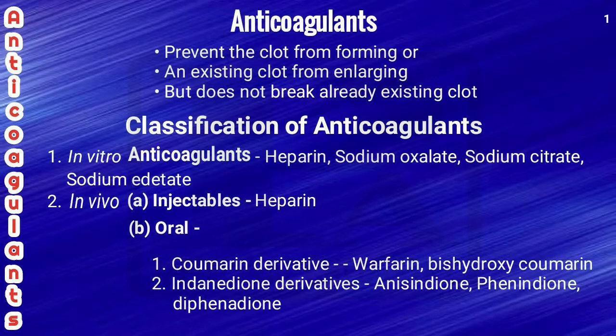In this class we are going to see anticoagulants. What are anticoagulants? They prevent the clot from forming or an existing clot from enlarging, but they do not break an already existing clot. That is the definition of anticoagulants. They are classified into two types: in vitro anticoagulants and in vivo anticoagulants.